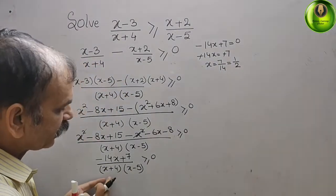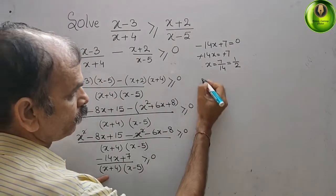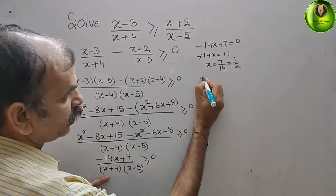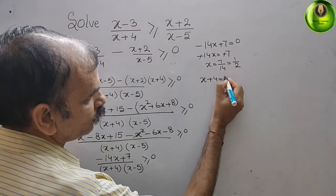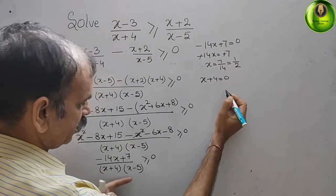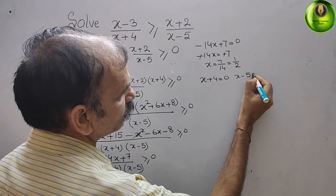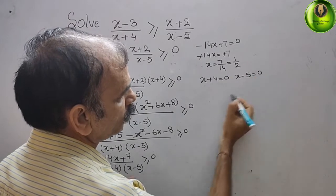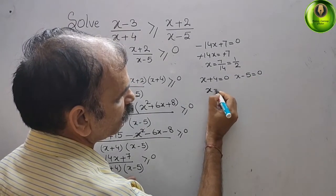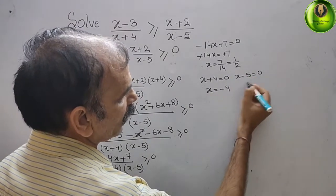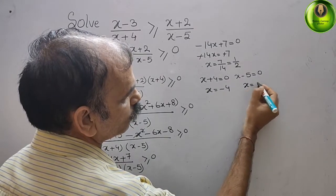These are already in factor form for the denominator. So we get x plus 4 equals 0 giving x equals minus 4, and x minus 5 equals 0 giving x equals 5.